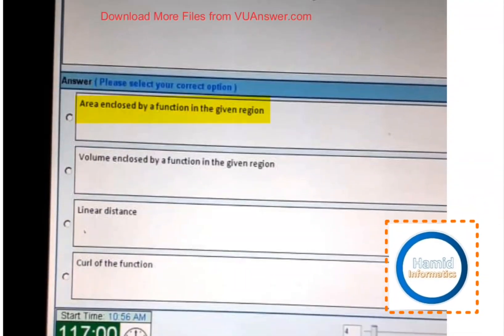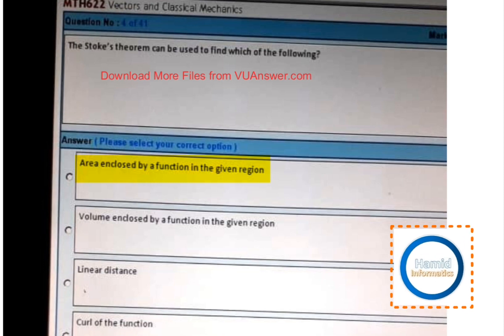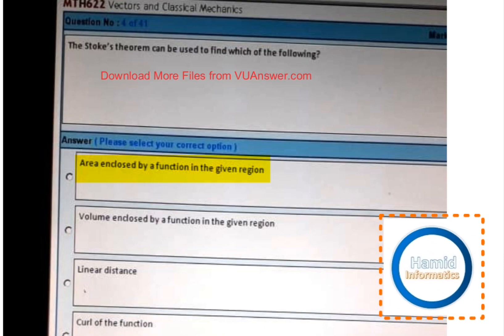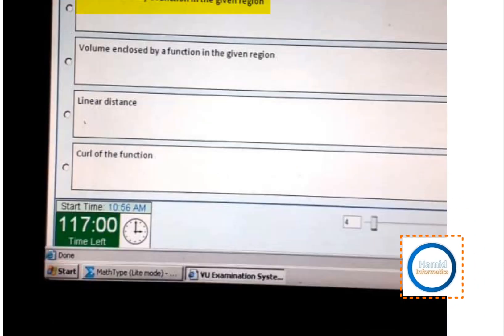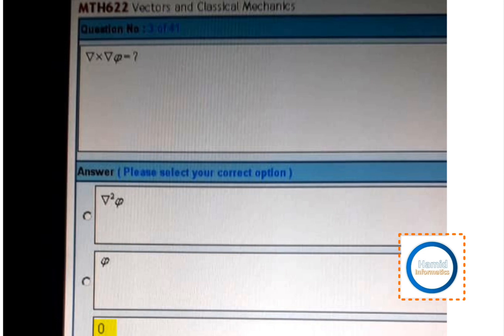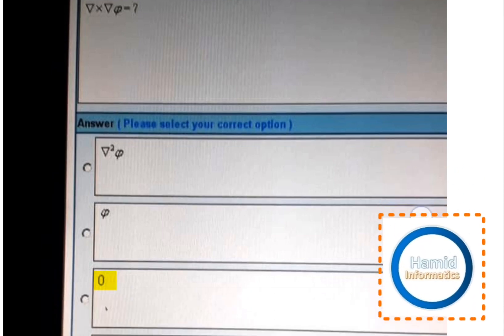The following area includes the form area included by a function in the given region. Del into del phi is equal to zero.